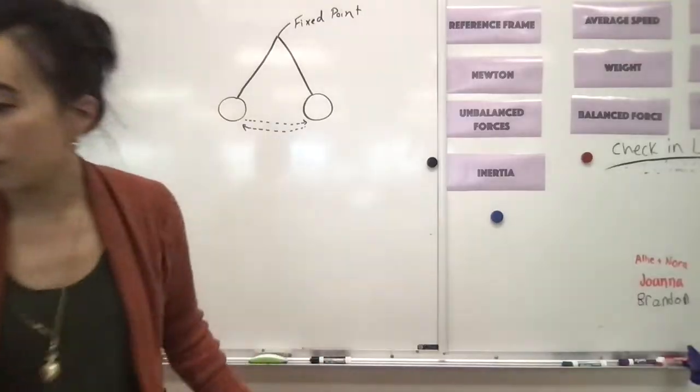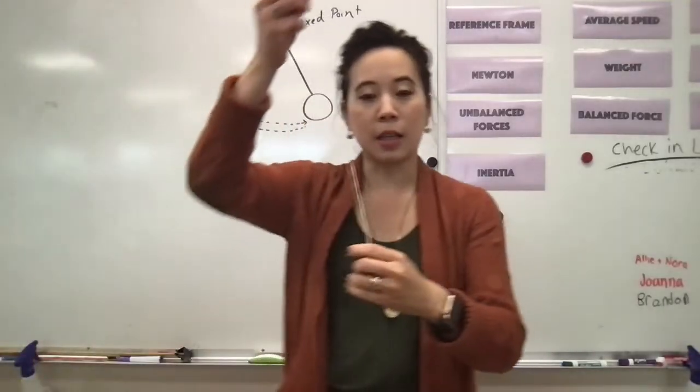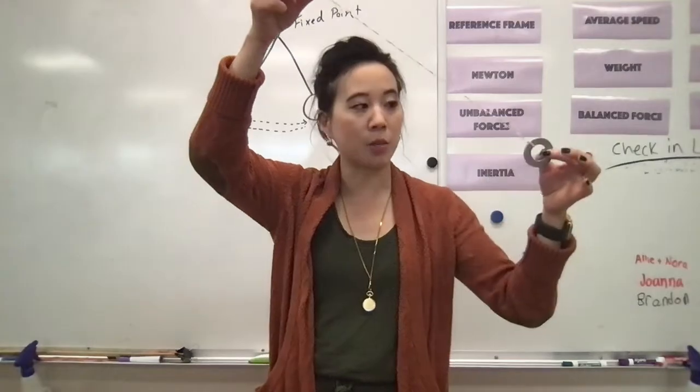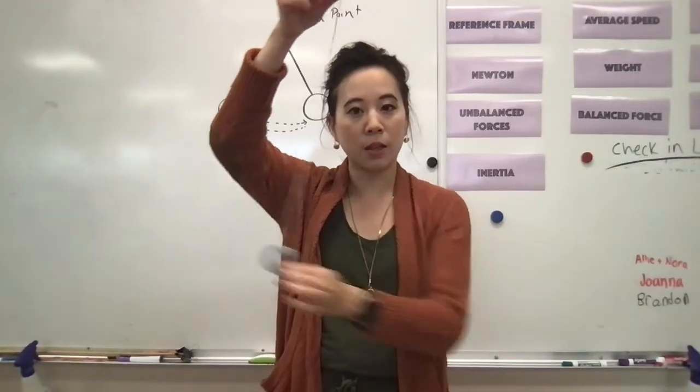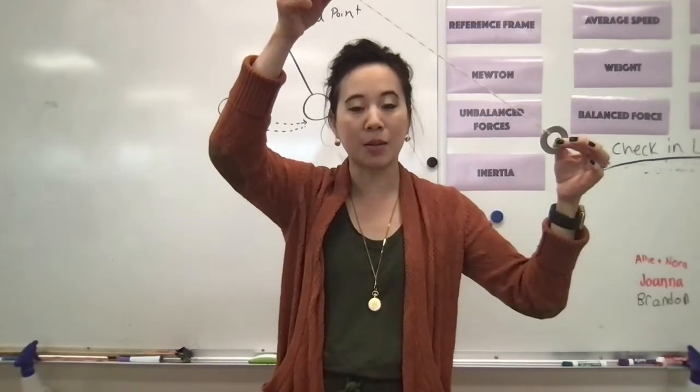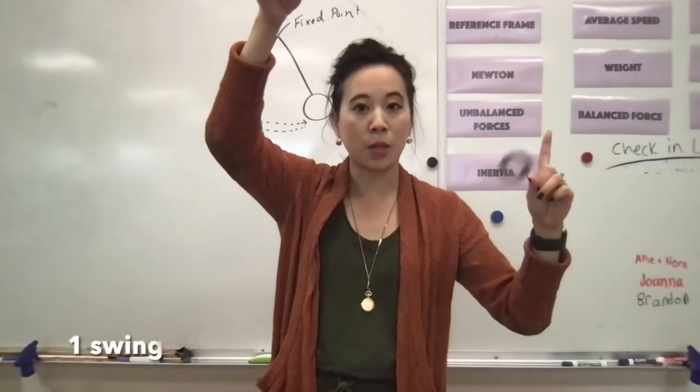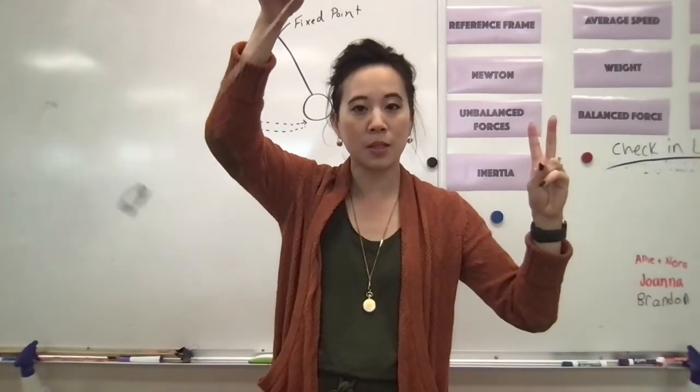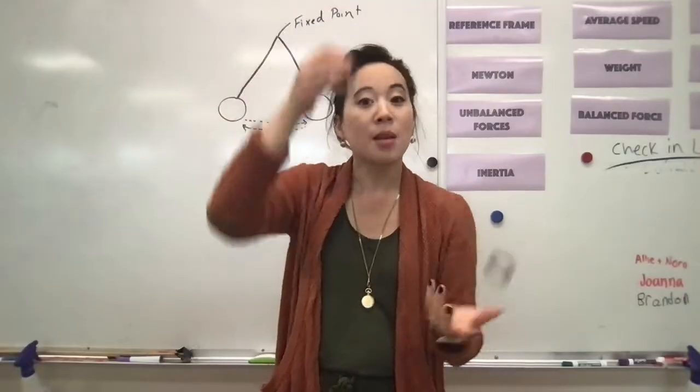If we were counting the number of swings of a pendulum, a swing is from here to here—that counts as one swing. So for instance, one swing, two swings, three swings.